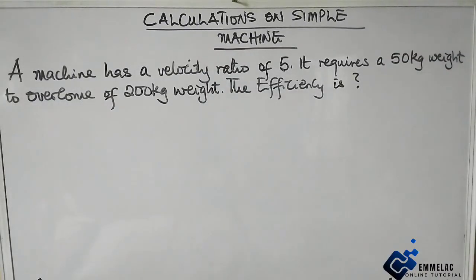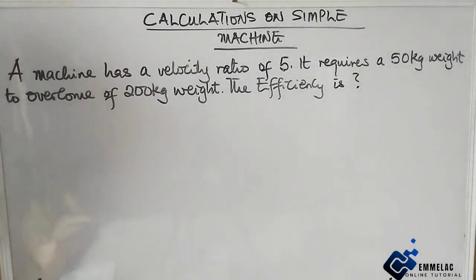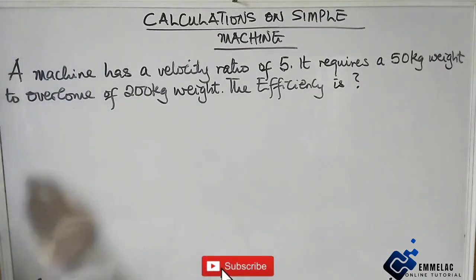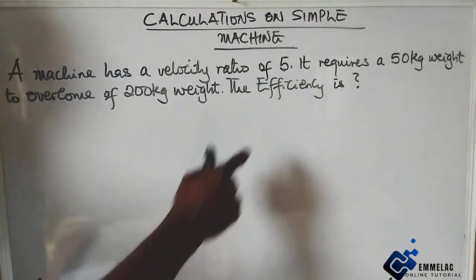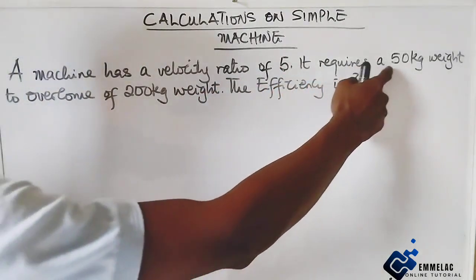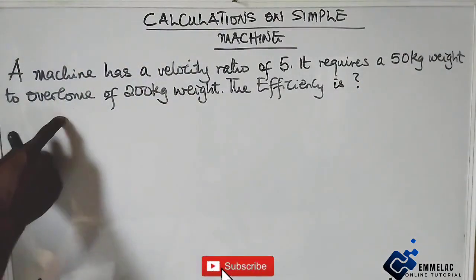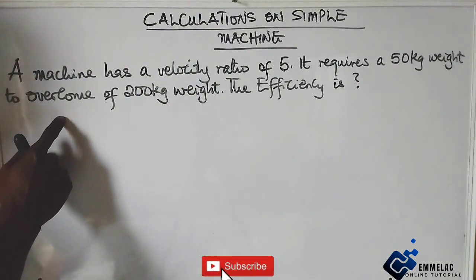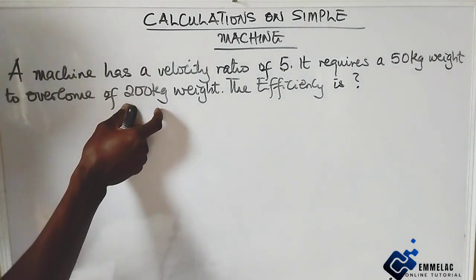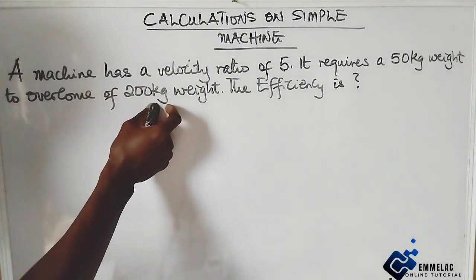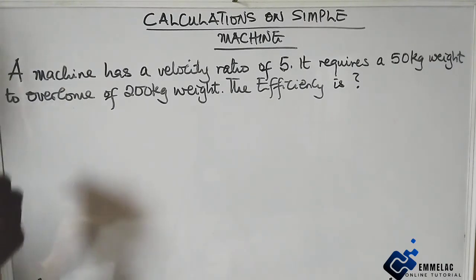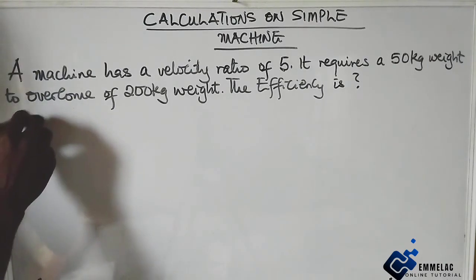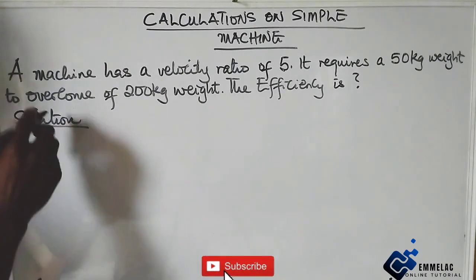Welcome to Emilac Online Tutorial. Before us is this question on simple machines. A machine has a velocity ratio of 5. It requires a 50 kilogram weight to overcome 200 kilogram weight. The efficiency is what? First of all, let us write out the parameters we have.